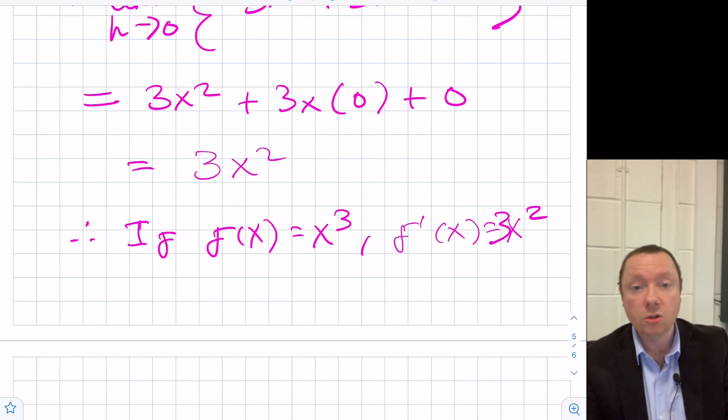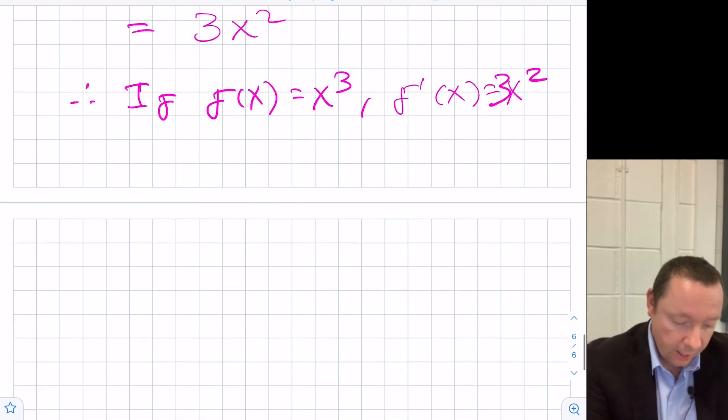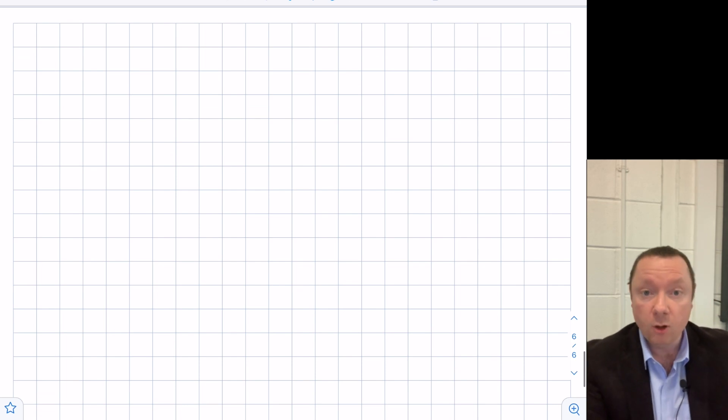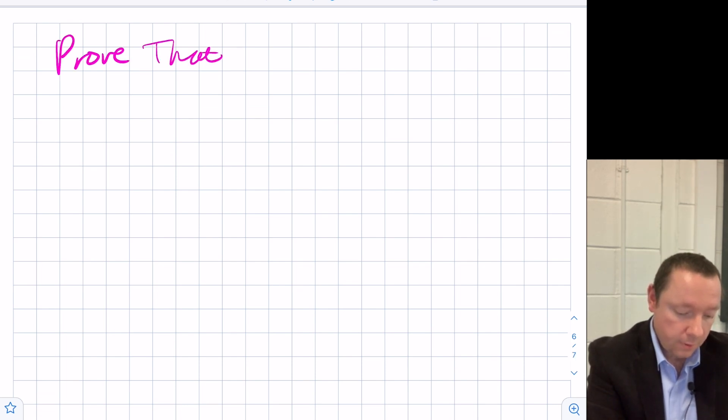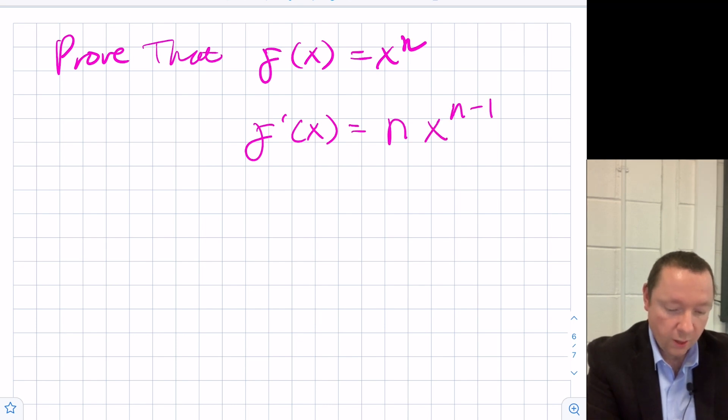Later on in the course, if you're doing advanced higher maths, you'll learn something called the binomial theorem. And using the binomial theorem, you can prove that if f of x equals x to the power of n, f dash x is n times x to the n minus 1. I'm not going to do that in this video.